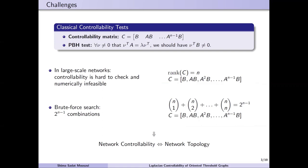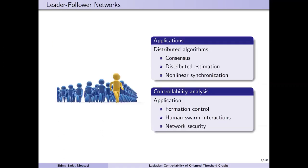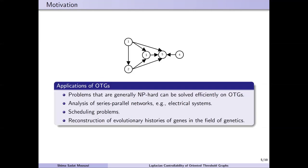Thus, we aim to infer the network controllability from the graph topology. Controllability analysis of Laplacian networks has gained a lot of attention because of their applications in many control scenarios. Laplacian controllability of undirected graphs like path, cycle, and threshold graphs has been studied in the literature, but the controllability of directed networks is more complicated. In this work, we extend existing results to study the controllability of directed threshold graphs. The problems that are generally NP-hard can be solved efficiently on OTGs. They can also be used in the analysis of series-parallel networks like electrical systems.